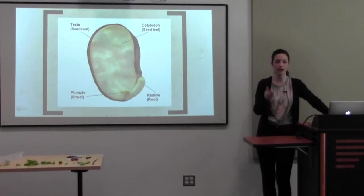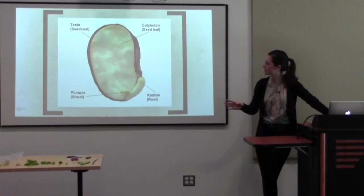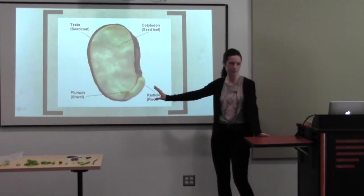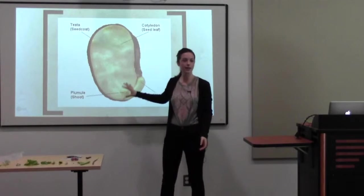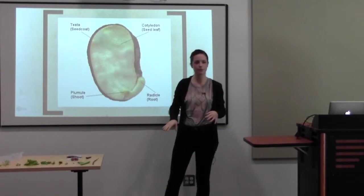You guys have seen a seed before, but if you ever cut one in half, you might see something like this. So to me this looks kind of like a lima bean. On the outside you have this tough seed coat that protects the seed from rain, wind, and everything else.